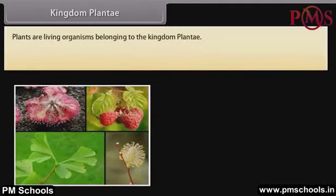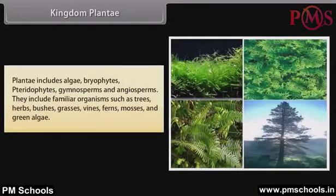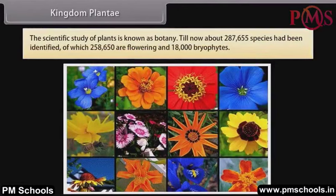Plants are living organisms belonging to the Kingdom Plantae. The plant cells have eukaryotic structure with prominent chloroplasts and cell walls mainly made of cellulose. Plantae includes algae, bryophytes, pteridophytes, gymnosperms and angiosperms. They include familiar organisms such as trees, herbs, bushes, grasses, vines, ferns, mosses and green algae. The scientific study of plants is known as botany.